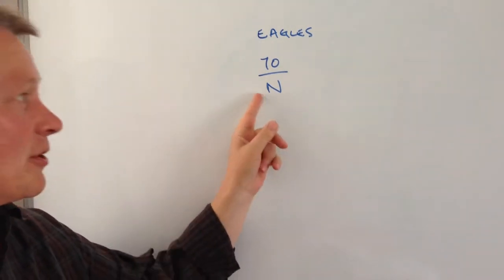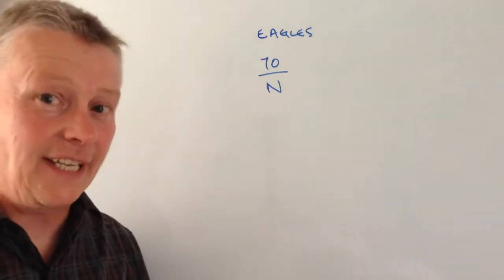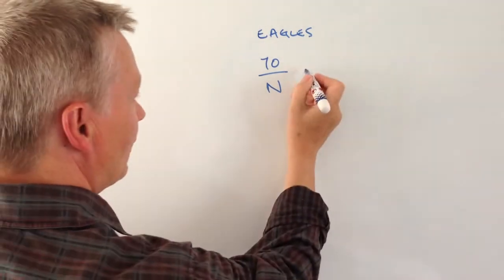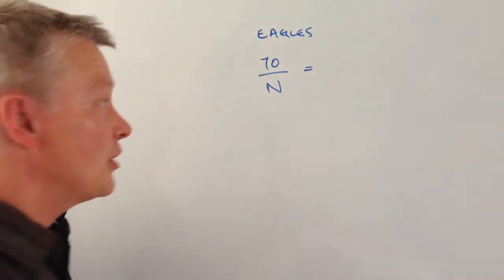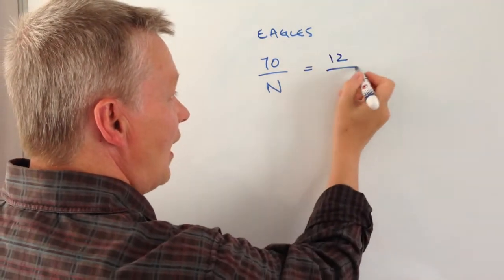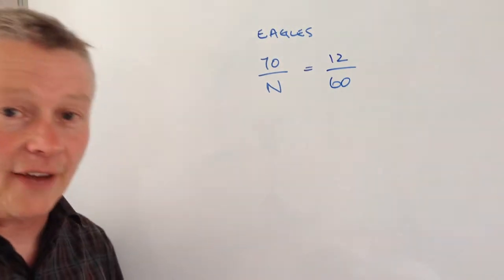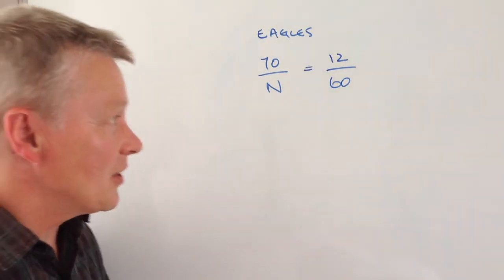60 eagles and finds that 12 out of the 60 actually have a tag on them. So really what we're saying is that we use this principle of equivalent fractions, in that if I multiply this 12 by